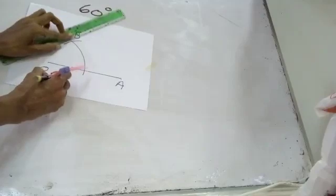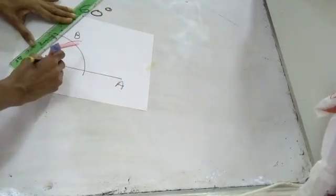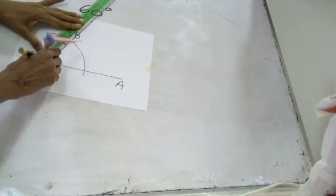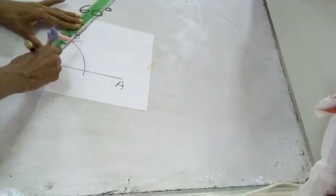Now, angle A-O-B is equal to 60 degrees.